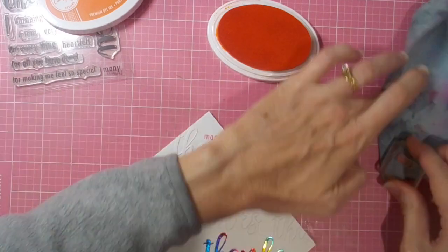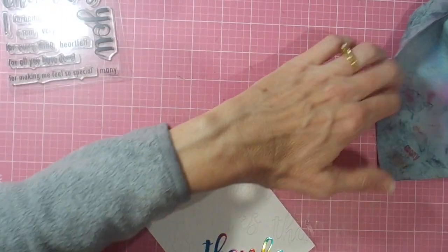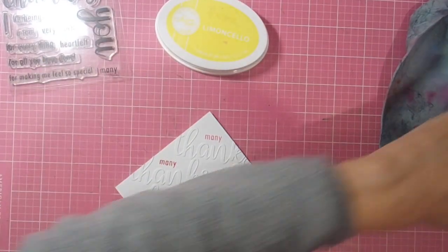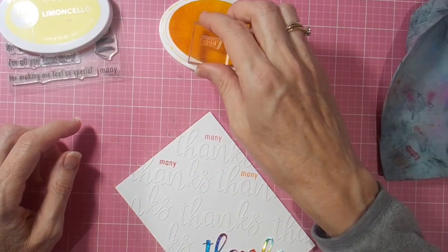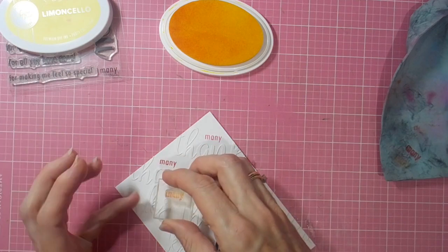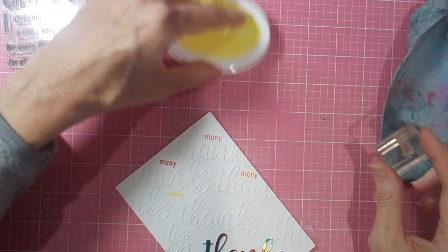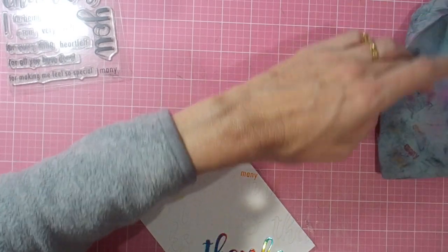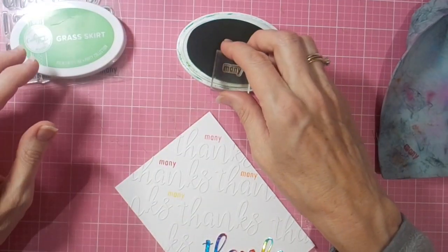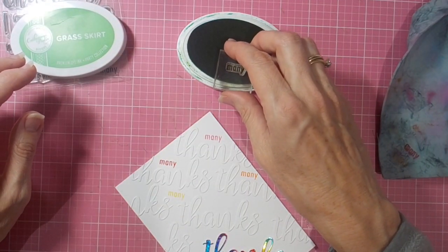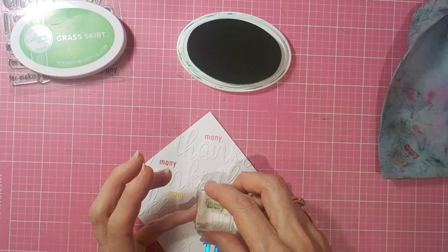Then the last little embellishment I add to the card is some Nuvo drops. I just add those at the end into a few places where there was a little bit of extra room, and it just gives that extra little bit of dimension just to finish off the card.